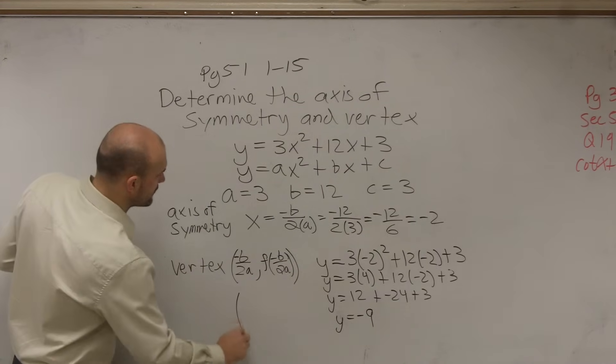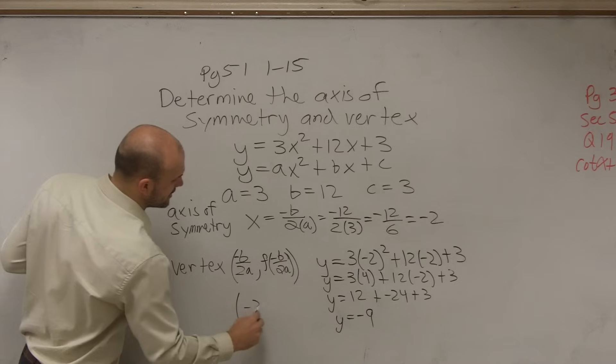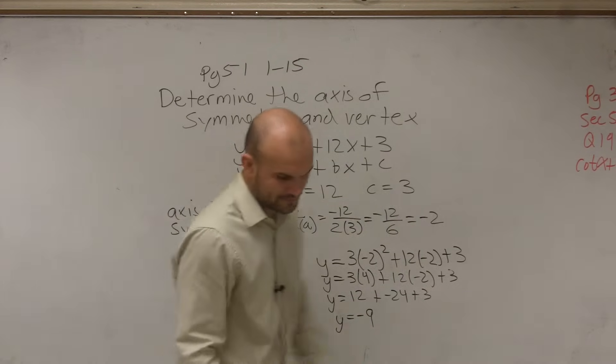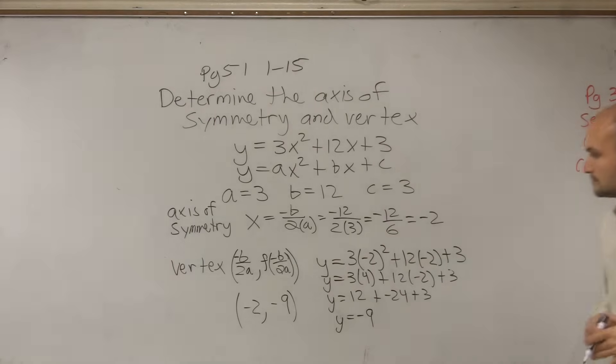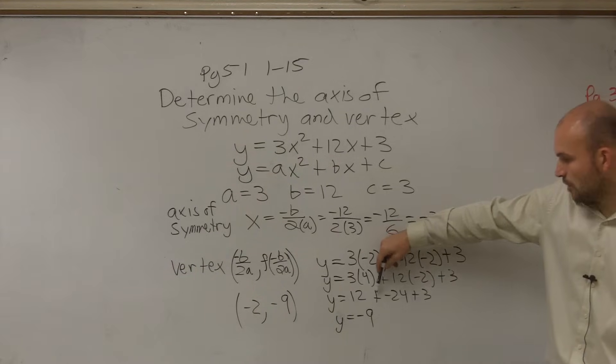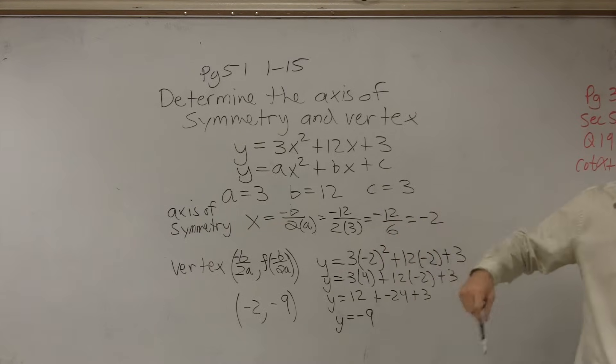Now, you can say your vertex has an x-coordinate of negative 2 and a y-coordinate of negative 9. How do you figure out what the answer is? How do you figure out what the answer is? If y equals 12 plus negative 24 plus 3, how do you know where to put all that? You just go 12 plus negative 24 is negative 12. And then negative 12 plus 3 is going to be negative 9. You always work from left to right.